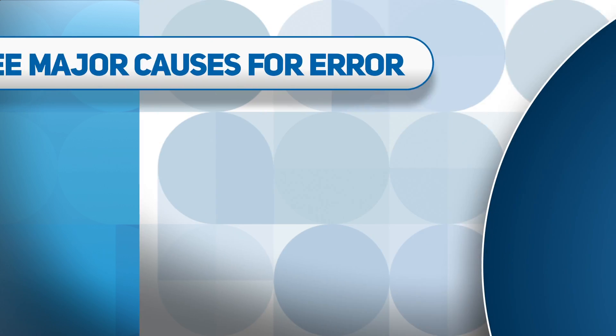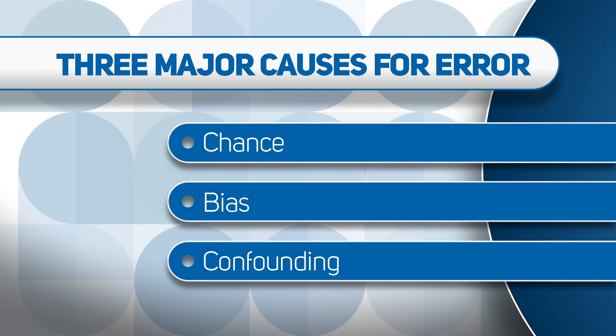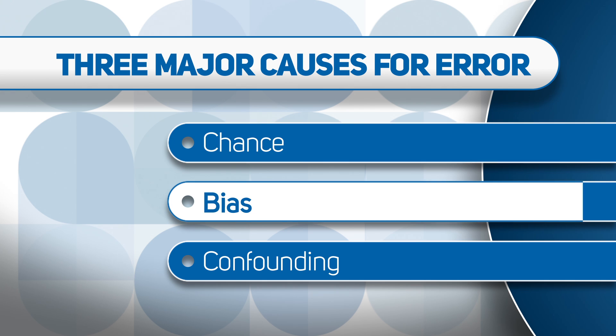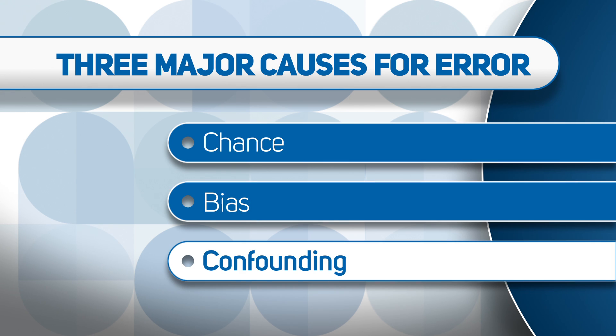Not surprisingly, epidemiologic studies are subject to inaccuracies and uncertainties. For epidemiology, there are really three big causes of these errors: chance, bias, and confounding. Let's discuss each in turn.